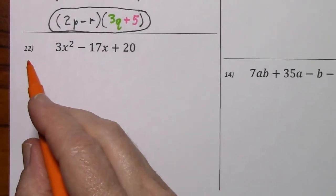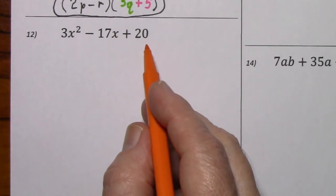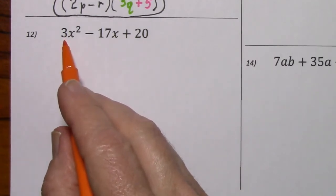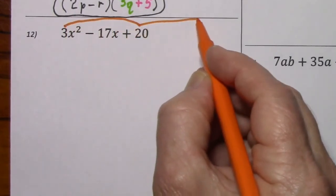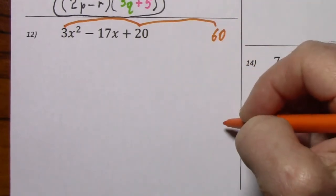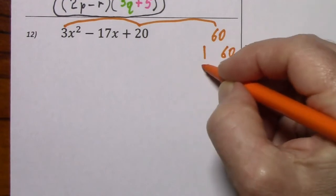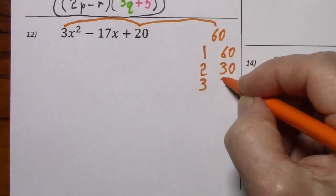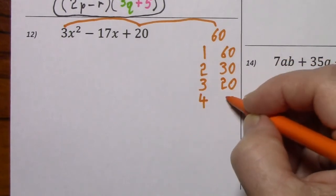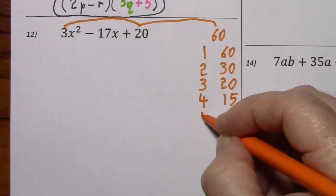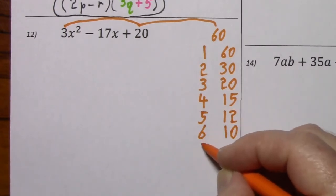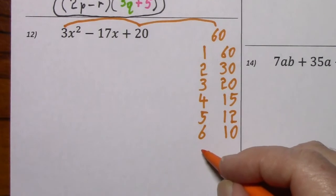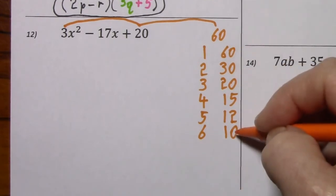Looking at number 12, there is no GCF other than 1. Three terms, leading coefficient other than 1, so we'll use factor by grouping. Multiply first times last and list the factor pairs. 4 works — cut that in half, 5 goes in there. 6 works — cut that in half. 7 won't. 8 won't, because if I double that I can't cut that in half. 9 doesn't work, and we already have 10. Here are all the factor pairs.